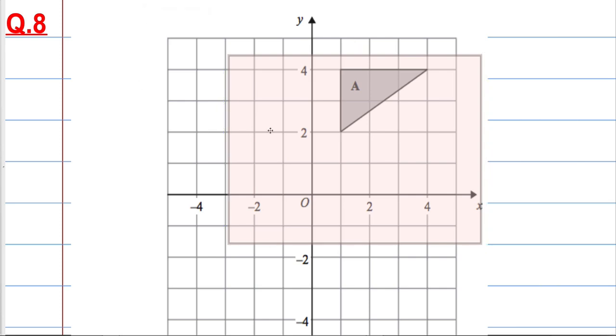There's my tracing paper and the first thing I'm going to do is mark the centre O, and then what I'm going to do is I'm going to trace the triangle A.